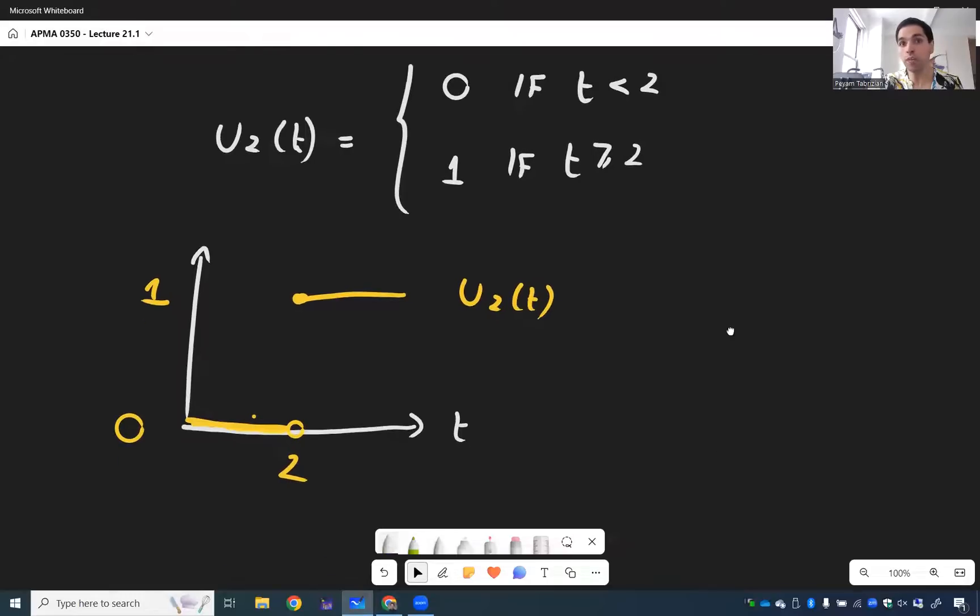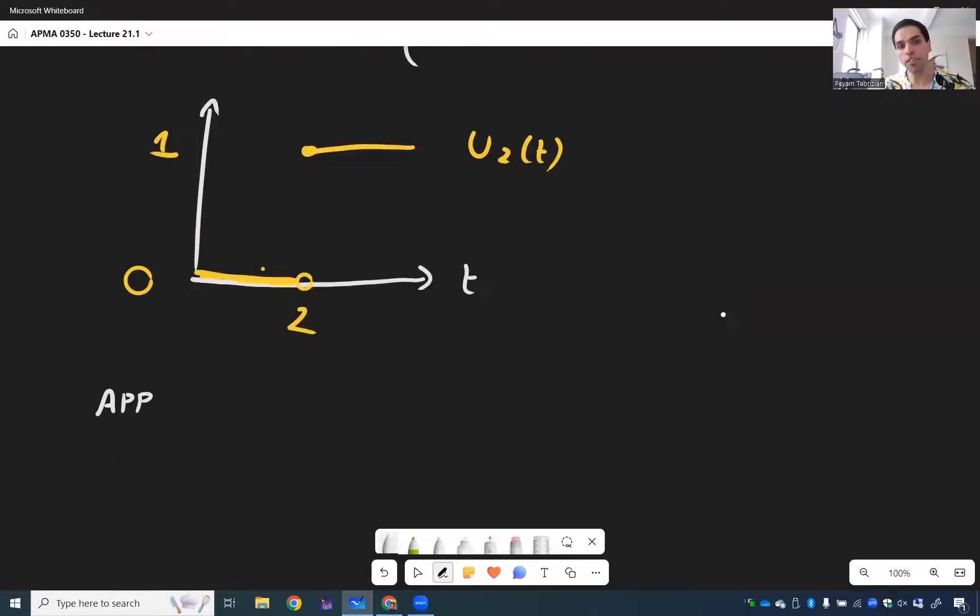And it's extremely important in applications, because what it represents is an off and on switch. Think a unit impulse, or a unit voltage. So U2 of T represents a unit impulse, voltage, or force at two.